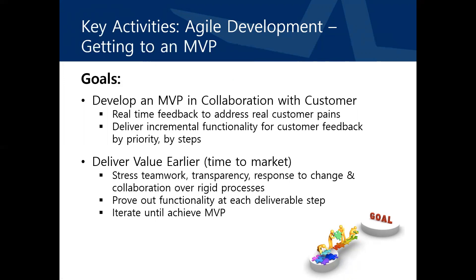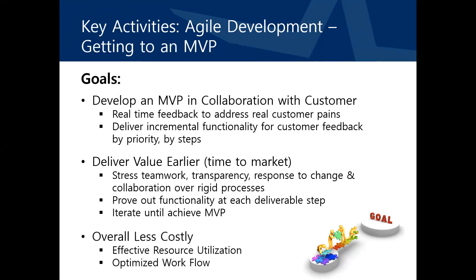Another goal from this process is to deliver value to the customer at an earlier point in time, accelerating the time to market. Accelerated time to market requires teamwork, transparency and communications, and an ability to respond to change. Functionality is proven out at each deliverable point to the customer. This process is iterated over and over until an MVP is completed. Another goal of this key activity is to deliver the MVP with a lower overall cost of development, achieved through effective resource utilization and optimization of workflow.